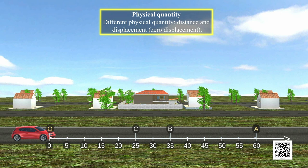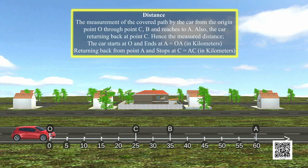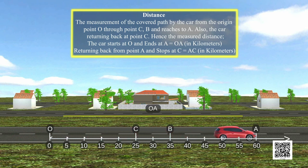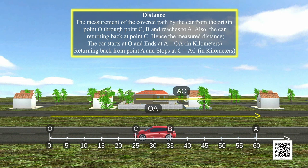Distance: The measurement of the covered path by the car from the origin point O through point C, B and reaches to A. Also, the car returning back at point C. Hence, the measured distance.